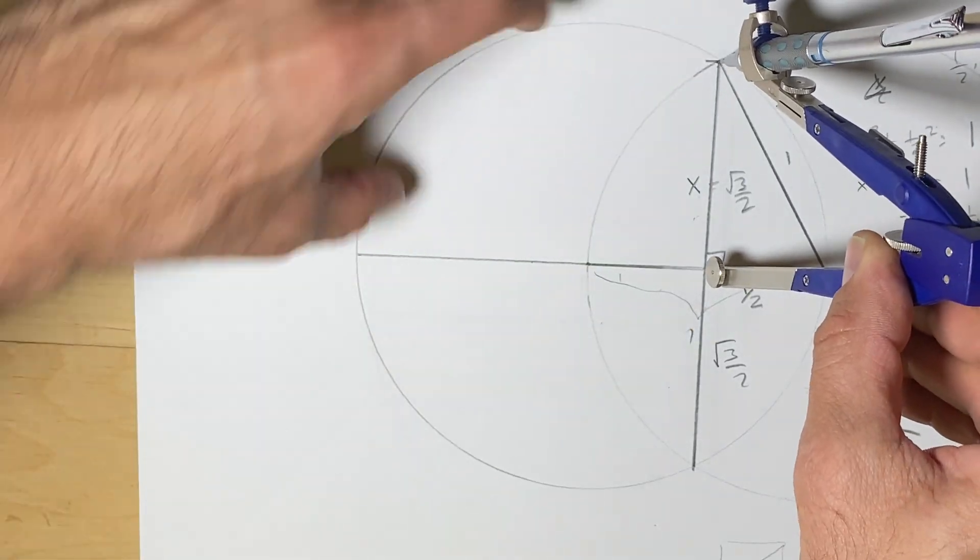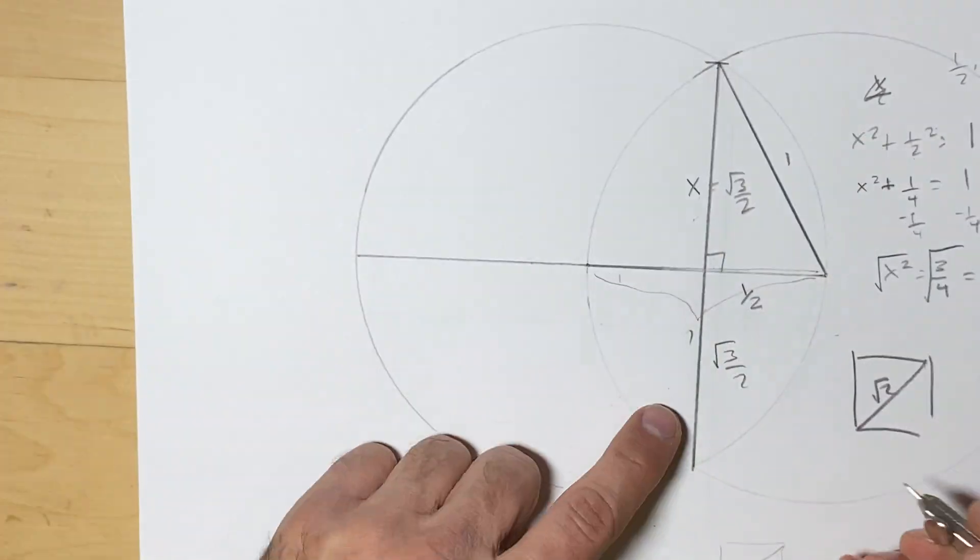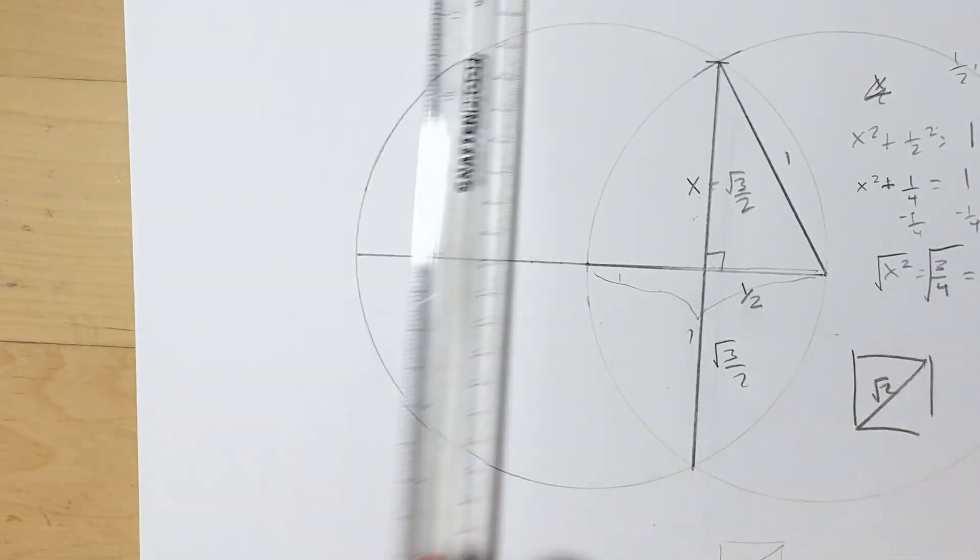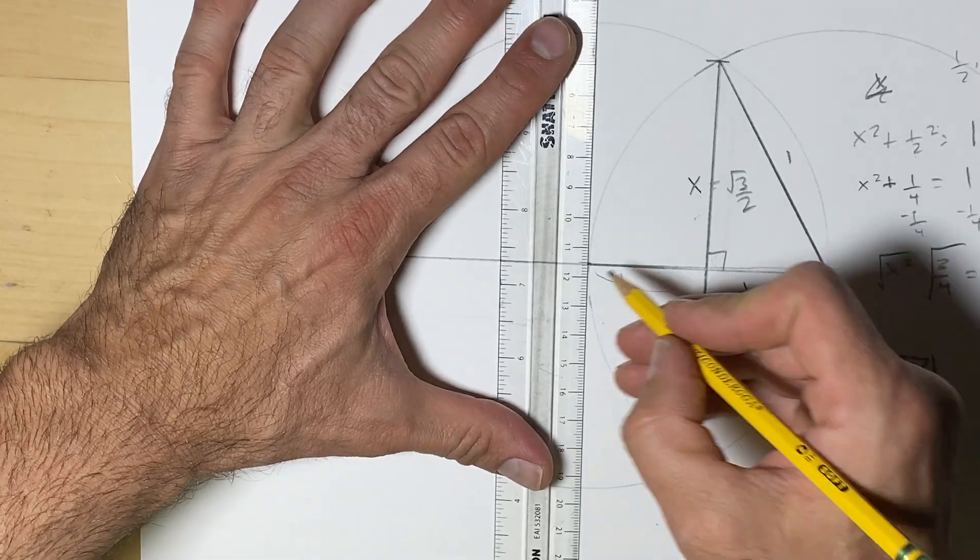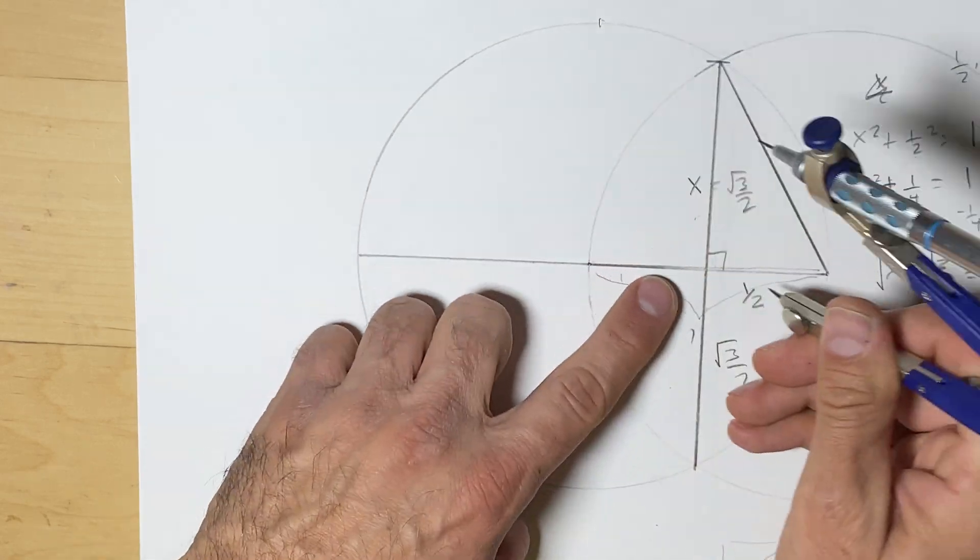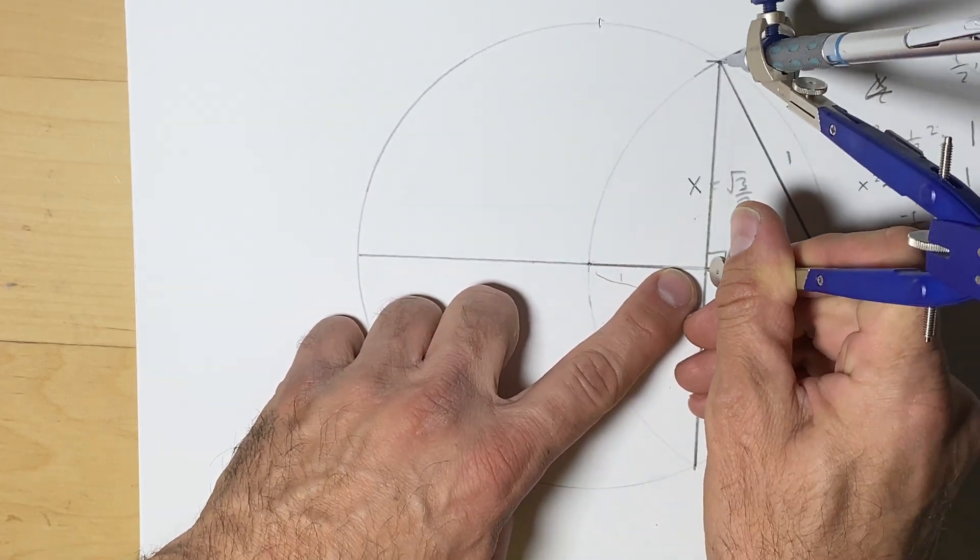From here to here, and that will give us our seven congruent spots. Let's pick a spot up here on top so the star's pointing upwards. Again, I'm going to double check because I just bumped it.